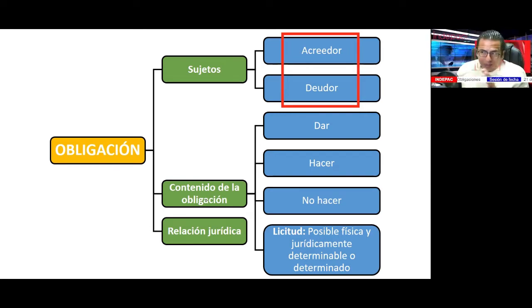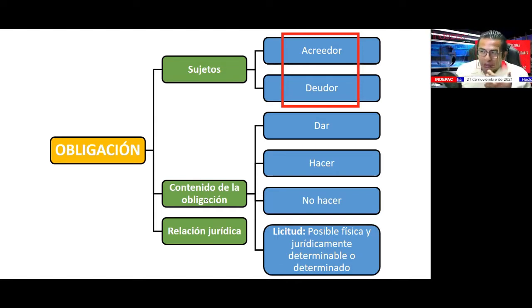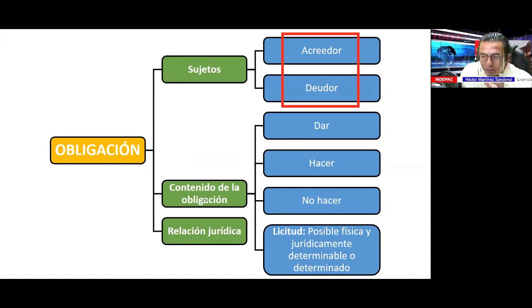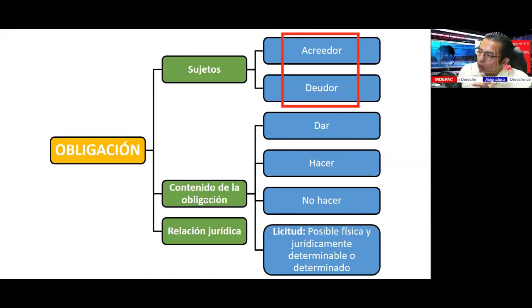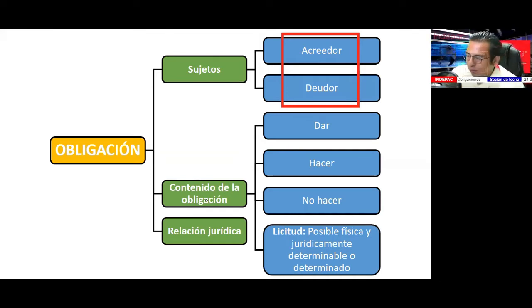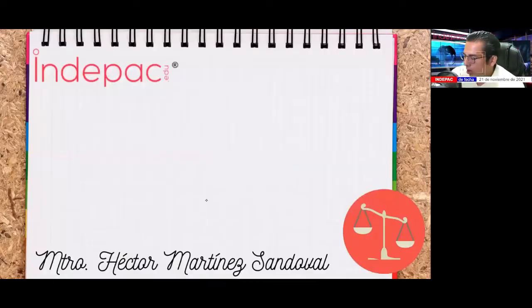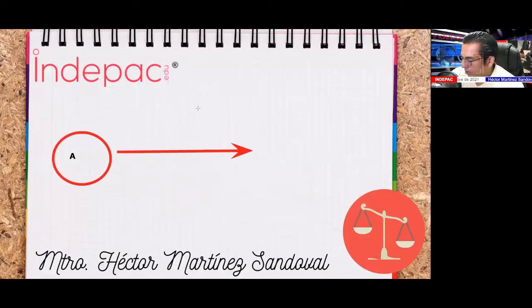Normalmente, compañeros, el mayor número de actos jurídicos que se celebran se cumple. En ese porcentaje de incumplimiento, surge una obligación y entonces vamos a exigir a la otra parte el cumplimiento de la misma. Pongo un ejemplo: vámonos por un contrato de arrendamiento. A es el arrendador, B es el arrendatario.